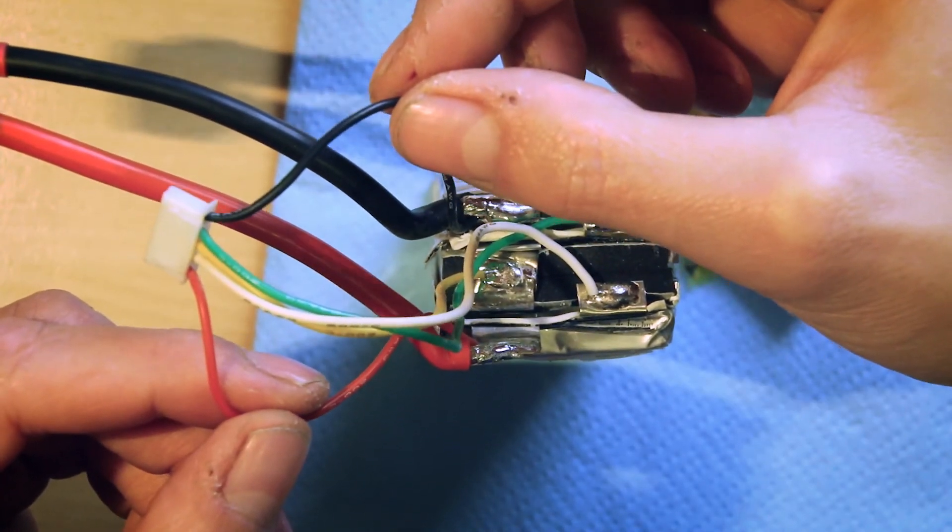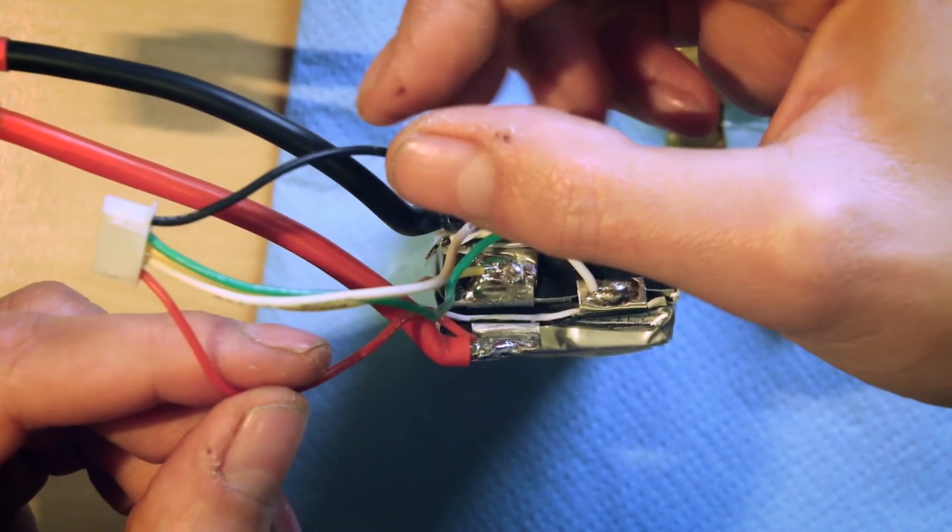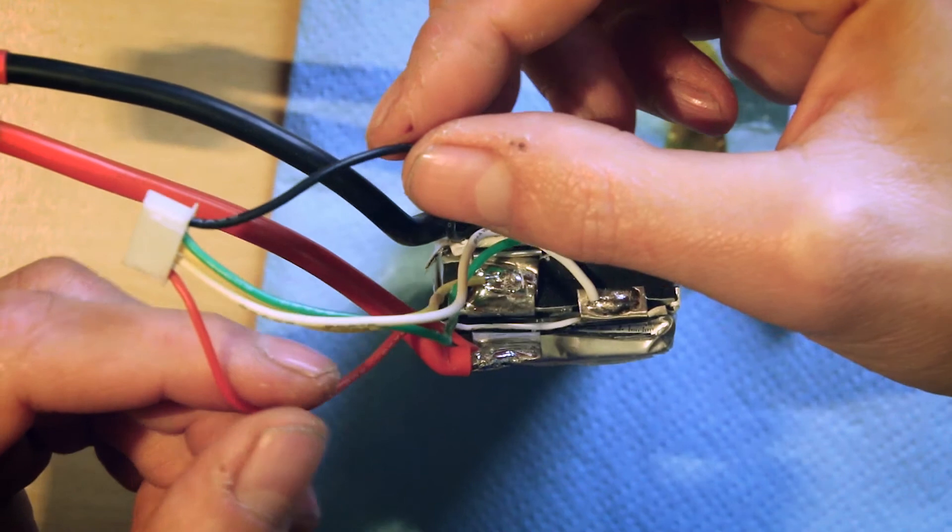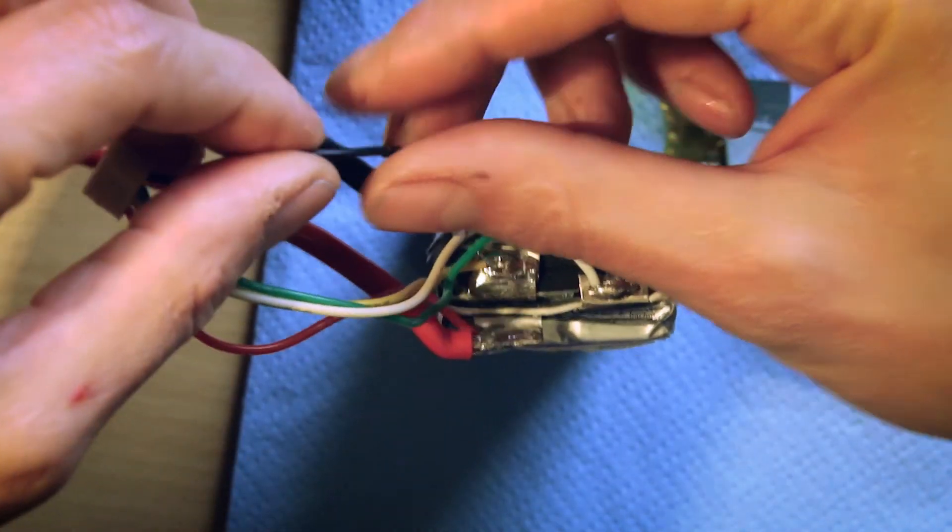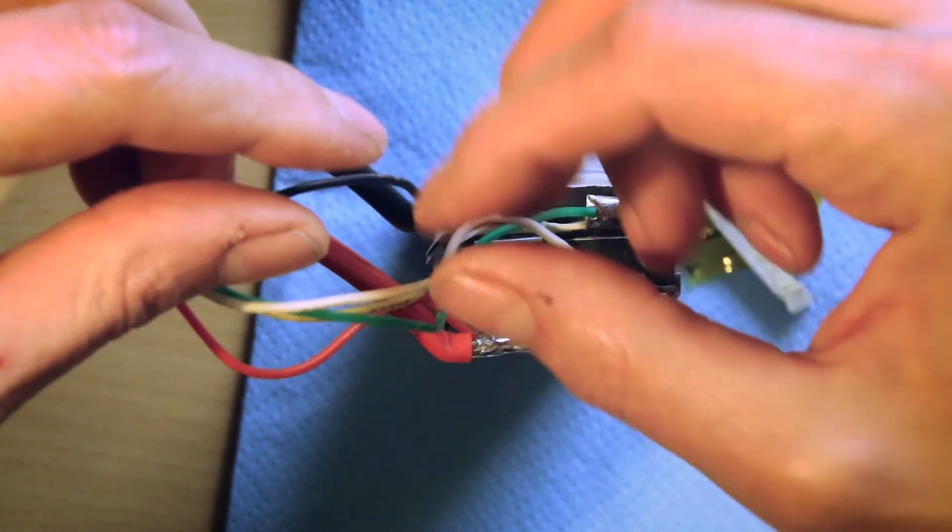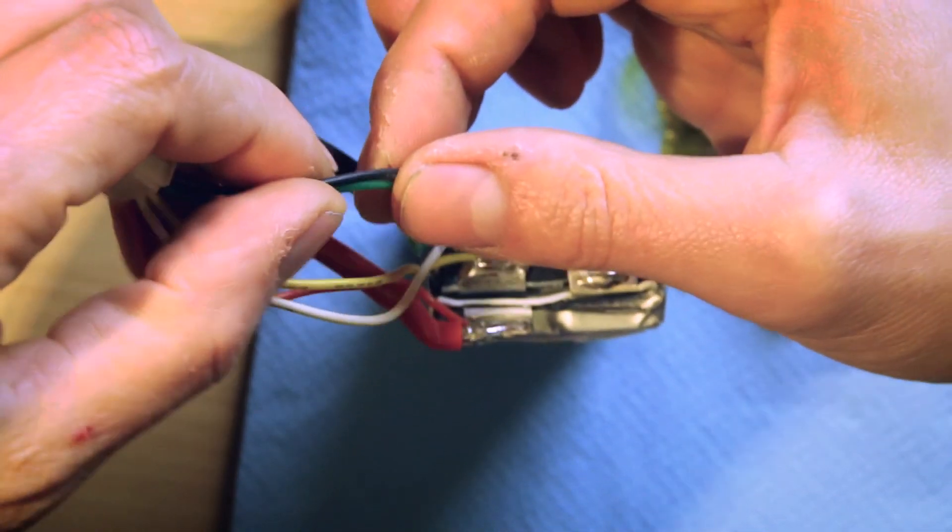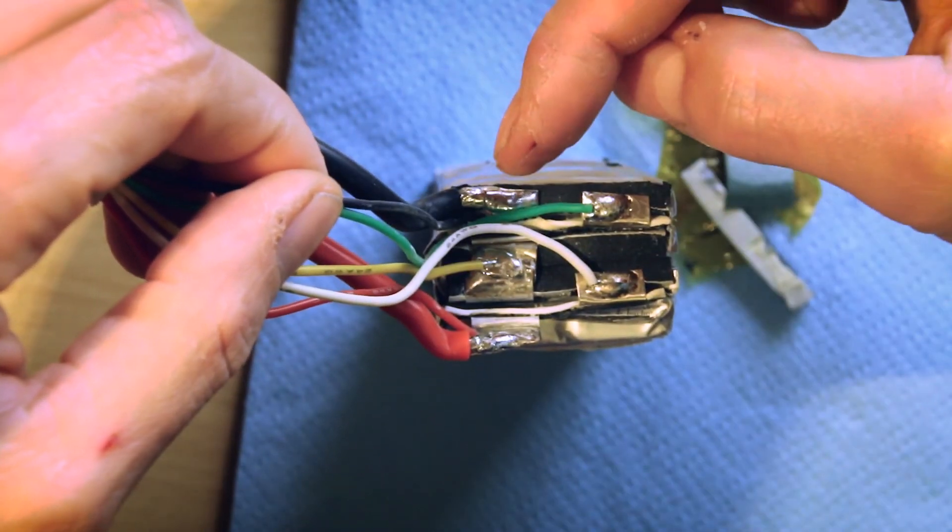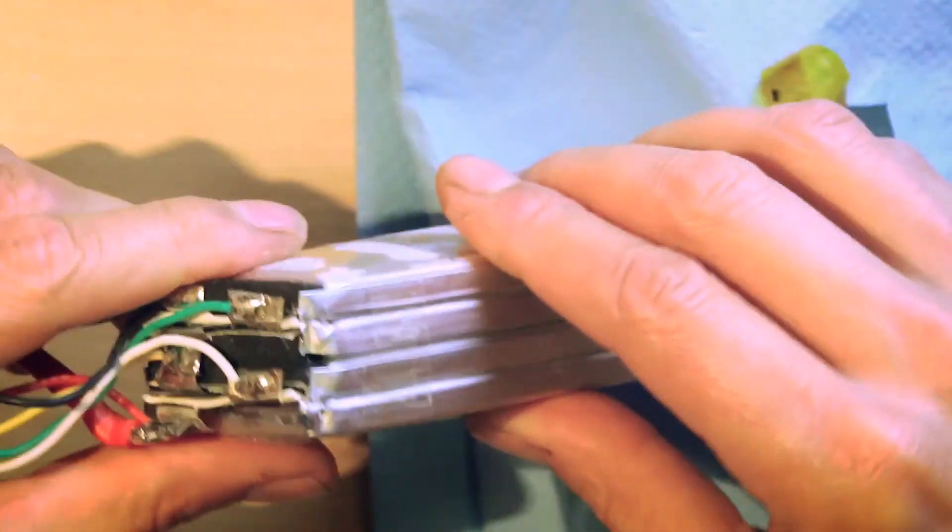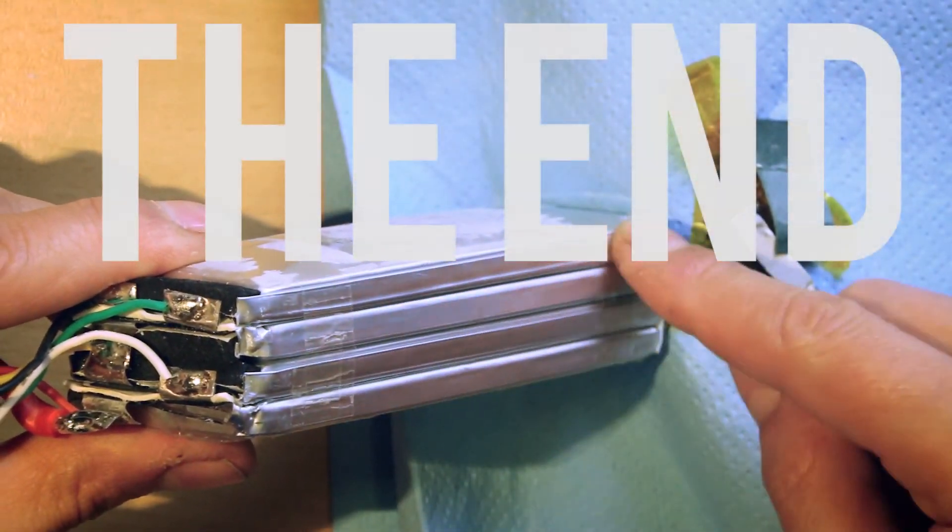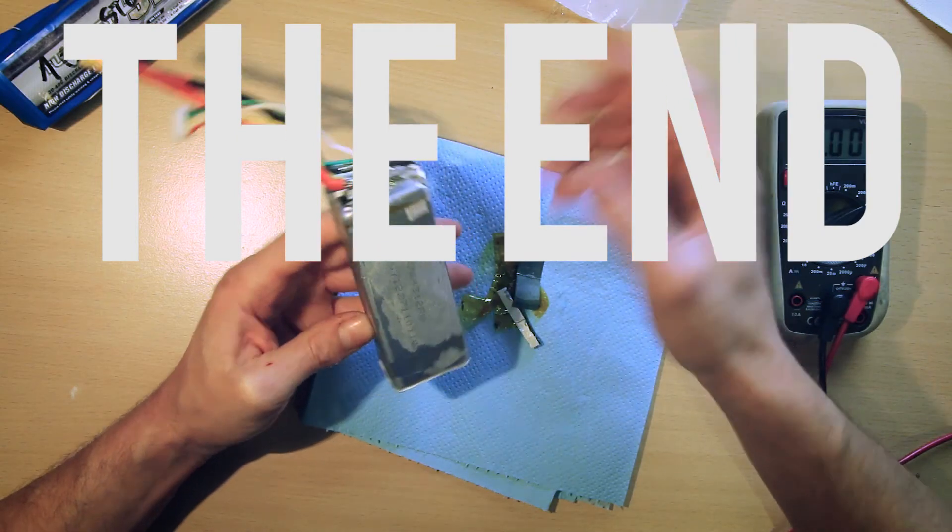This is the combined voltage of all 4 cells. And then you go with the black to the positive of the first cell. And this is this green wire. This combined, you have the voltage of the first cell. So that's about it about the LiPo.